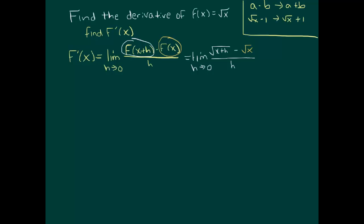And when you multiply conjugates together, in particular when you have an expression that involves a square root, it has the effect of removing that square root.